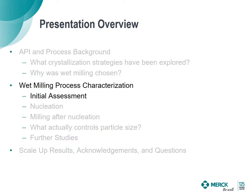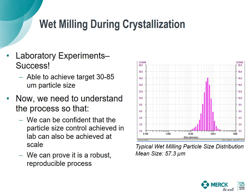Let's look at the initial assessment of this approach. When we tried this idea at small scale, we had success — though we were cautiously optimistic since we'd seen success before. But this approach looks very promising: we got right in the 30–85 micron particle size range. The particle size distribution on the right shows a mean size around 57 microns — right on target. We also had a really nice unimodal distribution with no fines tail that we'd seen from terminal milling, which was an added bonus. Now that we had proof of concept, we needed to be confident we could do this at scale and truly understand how it works.